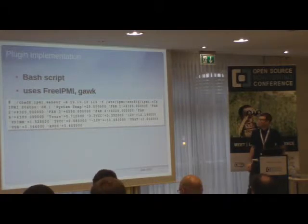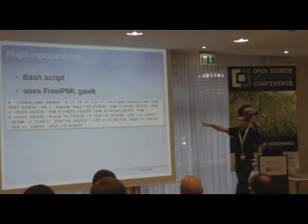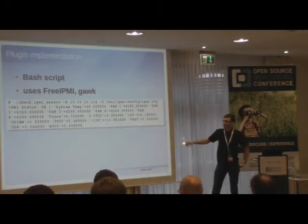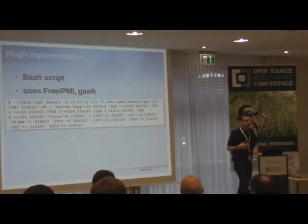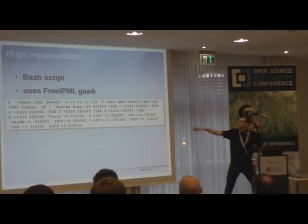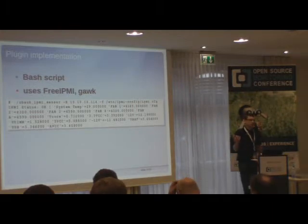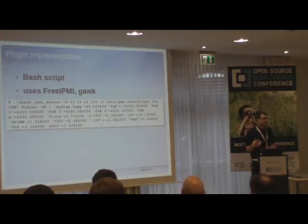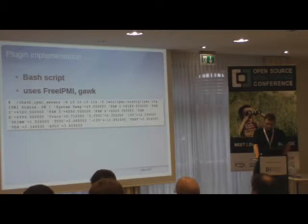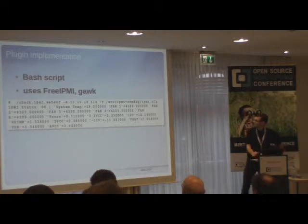Then we get the output, as defined by the Nagios plugin development guidelines. We have the status information, then the pipe symbol, and a bunch of performance data — and of course the return code indicating whether it's okay, warning, or critical. In this case we see all sensors are okay and we get values for all threshold-based sensors with analog readings, which we can use for PNP for Nagios, or graphing tools.